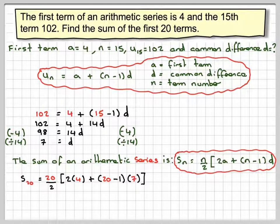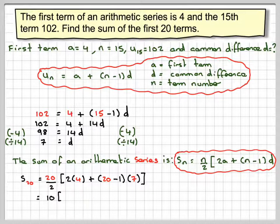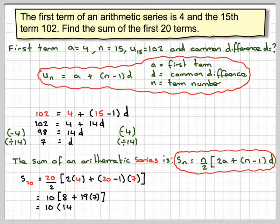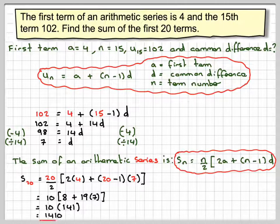Substituting carefully using brackets: 20 divided by 2 is 10, 2 times 4 is 8, that becomes 19 times 7. Then 8 plus 19 times 7 is 141, and 10 times 141 gives 1410.